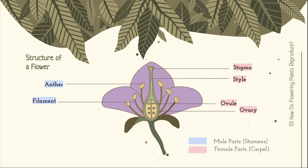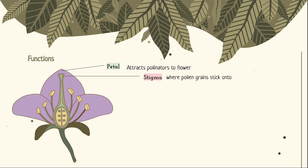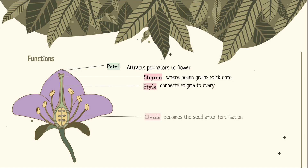And finally, the petal and flower stalk. What do each of the eight parts of the flower do? The petal, being bright and large, attracts pollinators like birds and bees to the flowers for pollination to happen. The stigma receives pollen grains, and the style connects the stigma to the ovary. The ovule becomes the seed after fertilization happens. The ovary protects the ovule and becomes the fruit after fertilization.